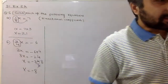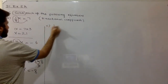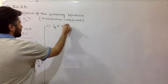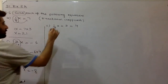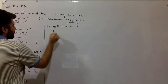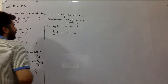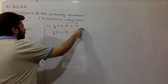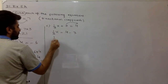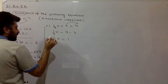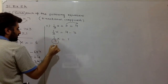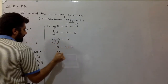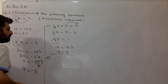Moving towards part C: 1 over 3x plus 3 is equal to 4. First, move this 3 to the right side. You get 1 over 3x equal to 4 minus 3, because the sign changes when you move plus 3 to the other side — it becomes minus 3. So 1 over 3x equals 1. Now get rid of this 3 from the denominator — move it to the right side. 1x becomes 1 times 3, so x equals 3.